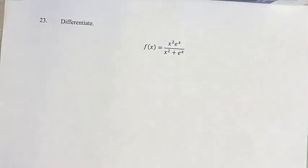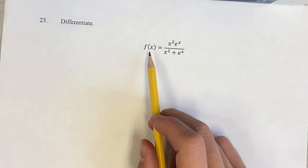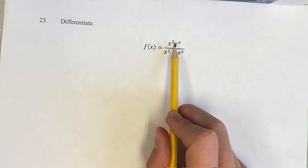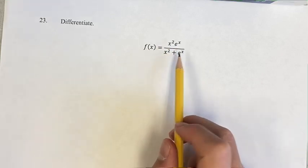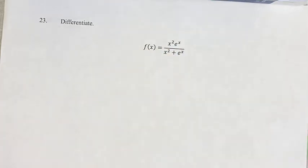Hello, and welcome back to another video. This problem we're finding the derivative of f of x equals x squared e to the x, over x squared plus e to the x.